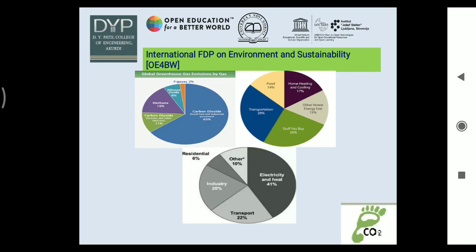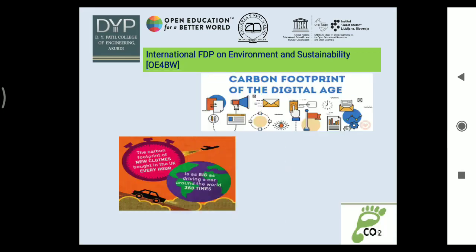Industry, transport, and electricity and heat — these three pie diagrams show how CO2 leads to a big hazard to the environment. Not only these activities, but even a simple carbon footprint can be enormous: the carbon footprint of new clothes bought in the UK every hour is as big as driving a car around the world 360 times.